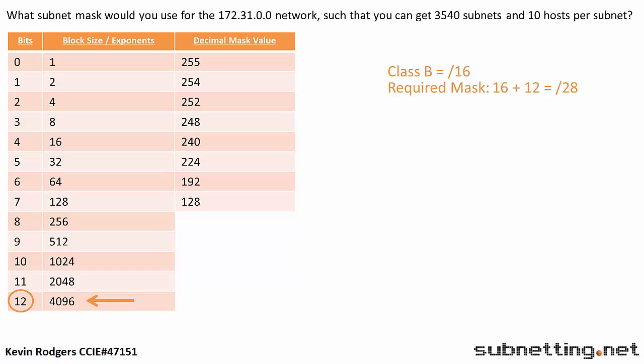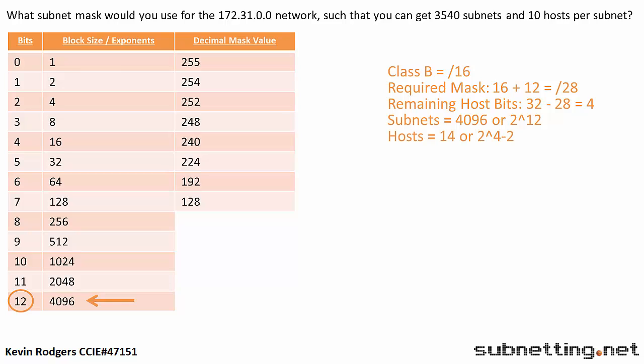That is our answer. To confirm we have enough host bits, we take the total bits which is 32 and subtract our 28 network bits, which leaves us with 4 host bits. So with our slash 28 we will have 4096 subnets with 14 hosts per subnet.